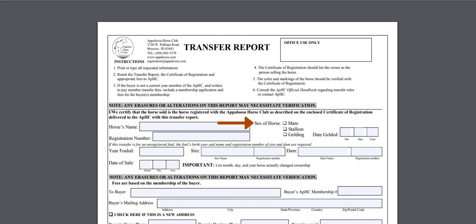To the right of the horse's name you will find an area to indicate the sex of the horse. If the horse has been gelded, please provide the date the operation took place. We do need the date in order to update your horse's certificate.